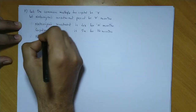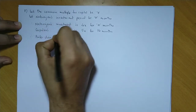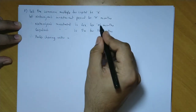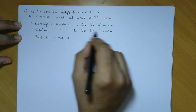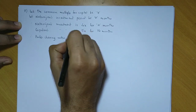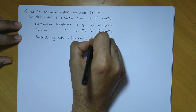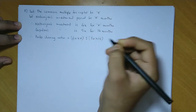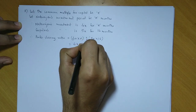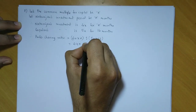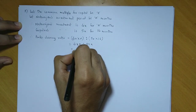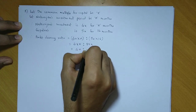Therefore, the profit sharing ratio is calculated by taking the product of investment and duration, since both are different. So profit sharing ratio equals 4x × n : 5x × 16, which gives 4xn : 80x. Cancelling the common factor x, we get 4n : 80.